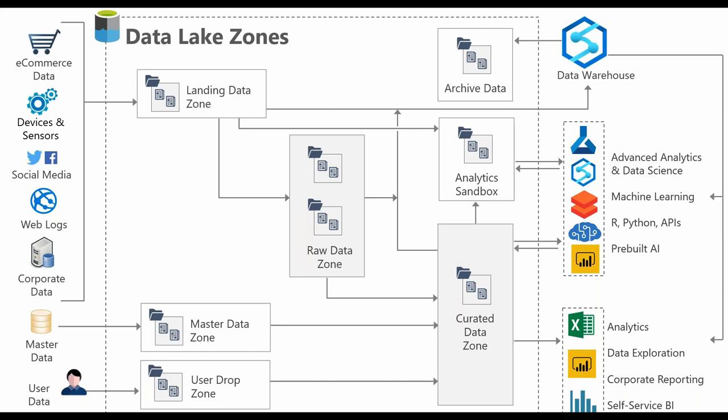From the raw zone, we might have different aggregations or reporting tables we want to enable at the raw transaction level directly inside the data lake. We bring that data into a curated data zone — these will be reporting tables enabled directly inside the data lake. Over time, we could also bring that data from the curated zone into the data warehouse as a new subject area model.